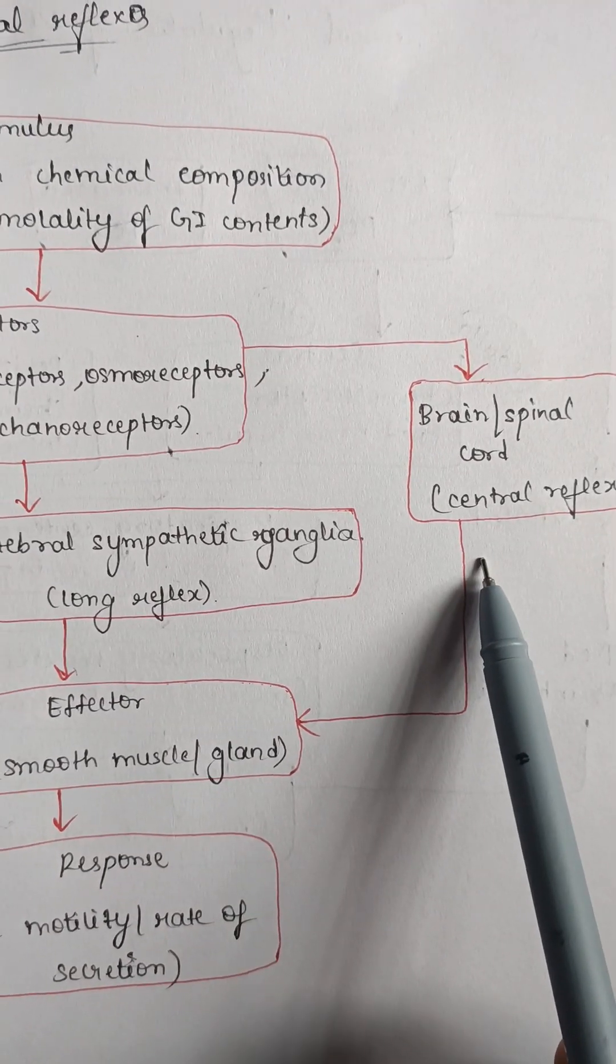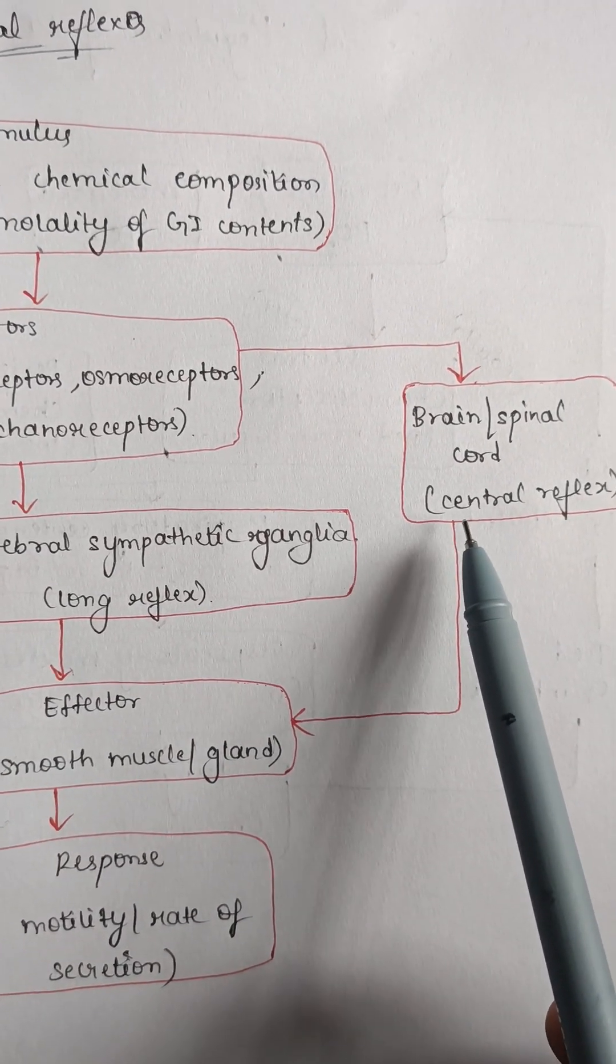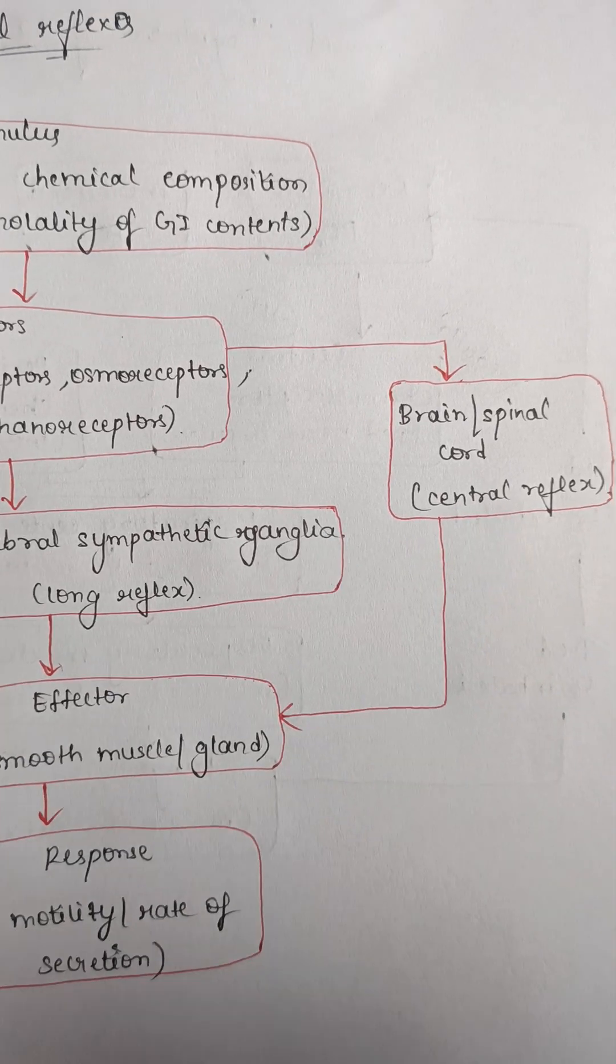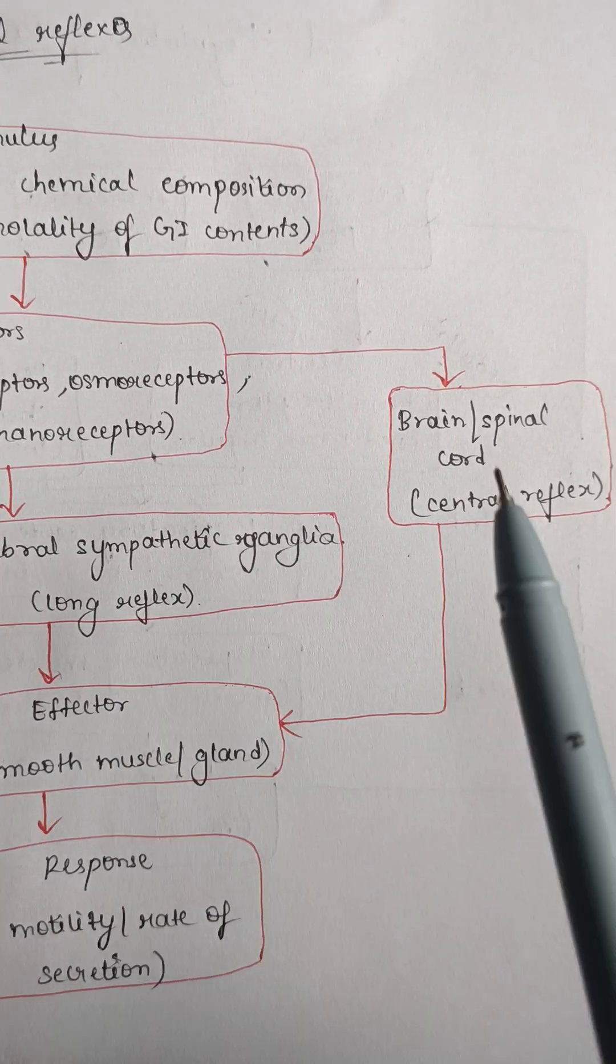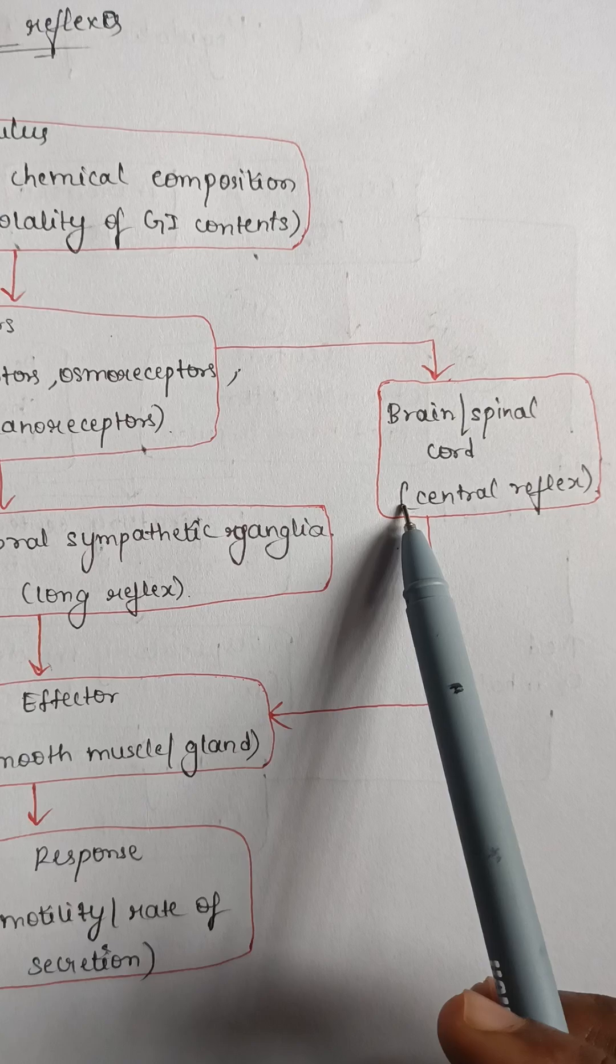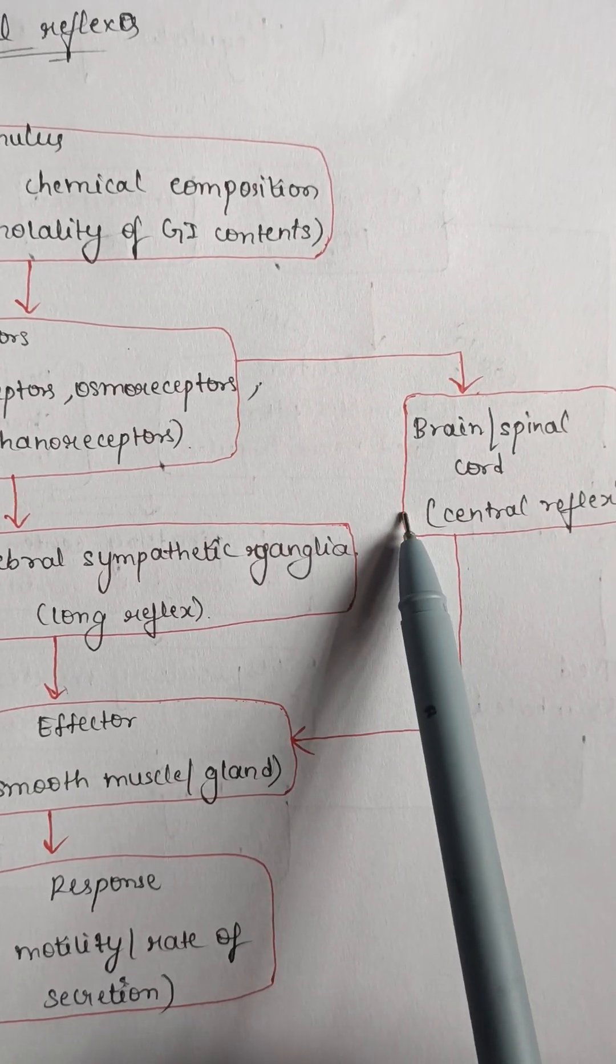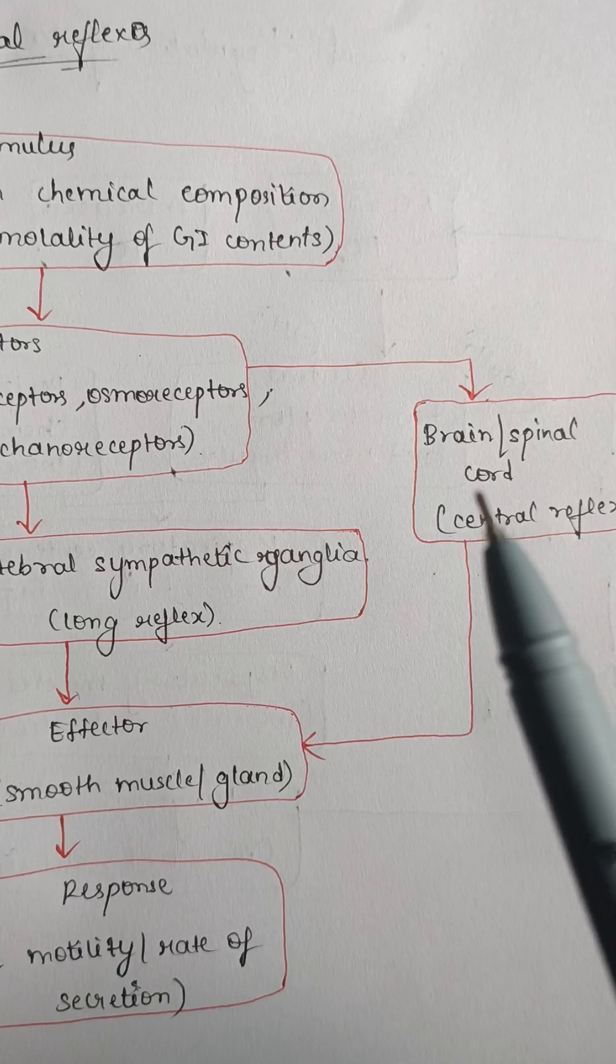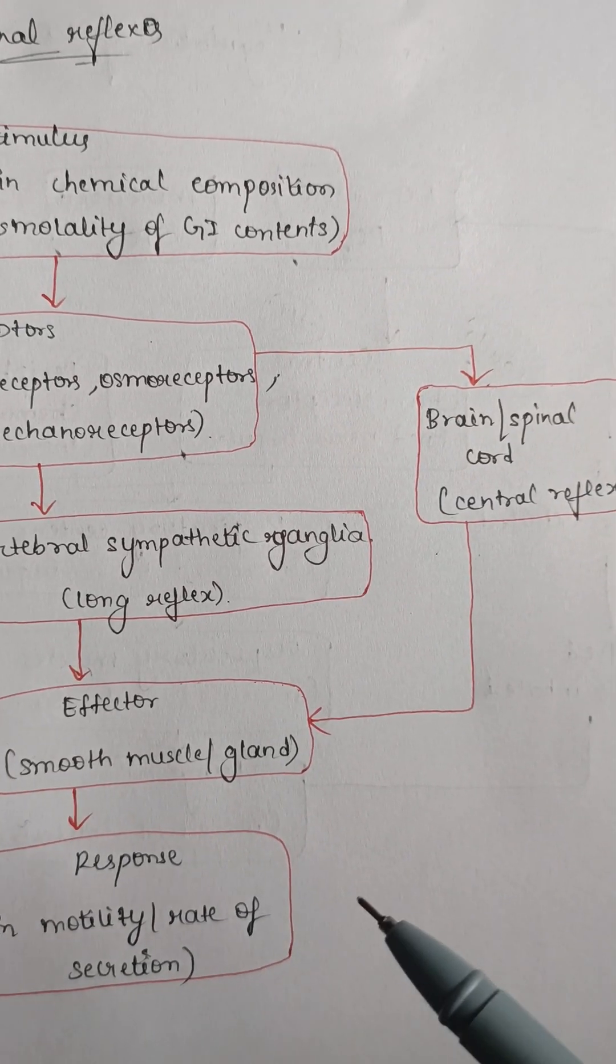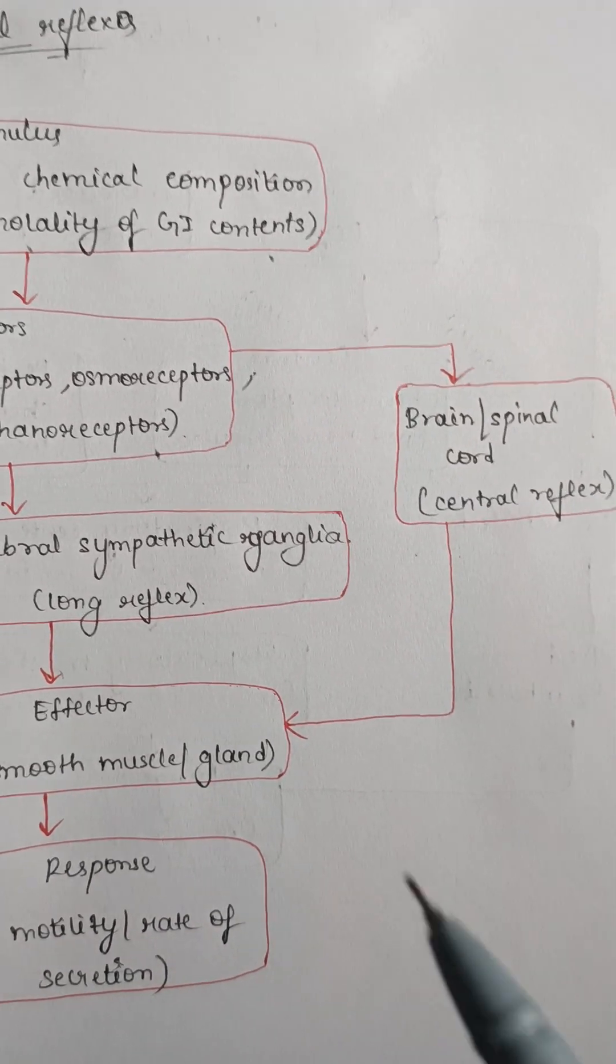Next is central reflex, which also has long reflex arcs. It involves mainly brain and spinal cord as its center. The best example for this is defecation reflex, which travels from colon and rectum to the spinal cord and back.